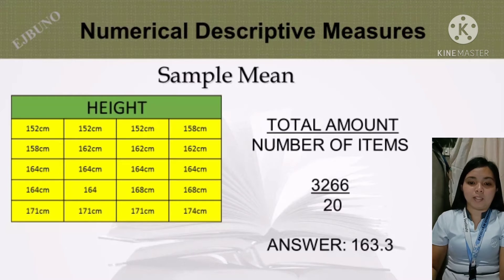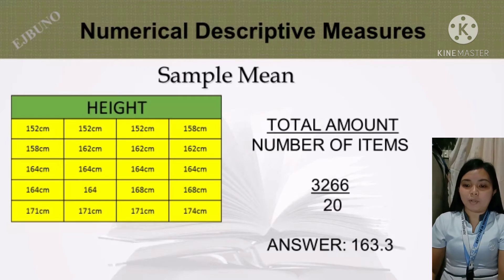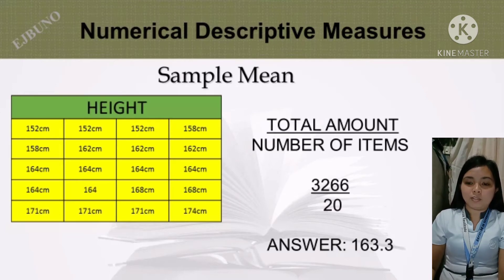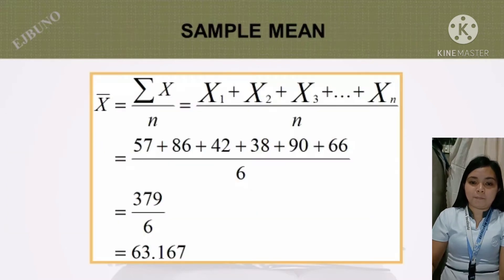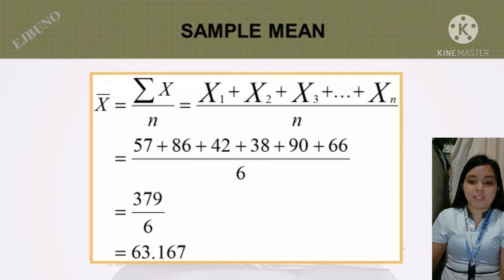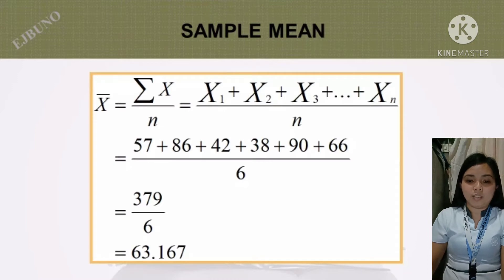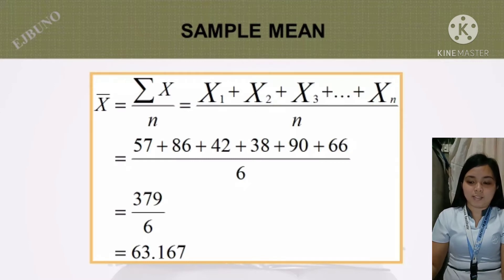Example of sample mean: the height total amount over the number of items equals 3,266 over 20. The answer is 163.3. Another example: 57 plus 86 plus 42 plus 38 plus 90 plus 66 over 6 equals 379 over 6. The answer is 63.167.